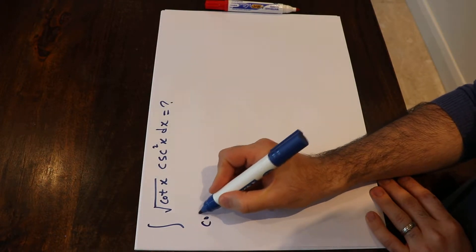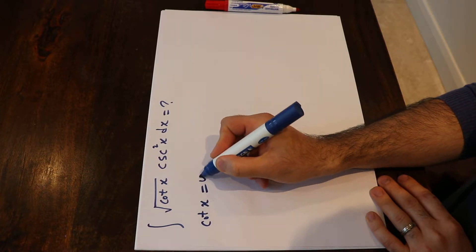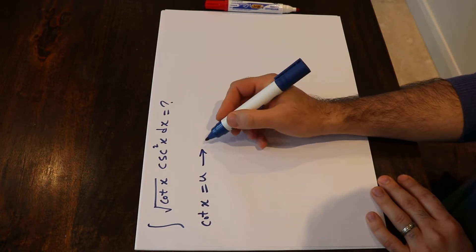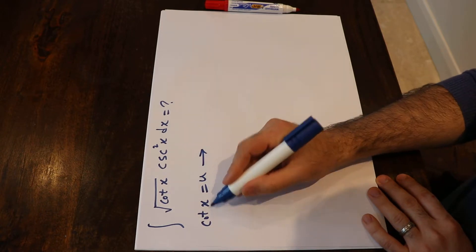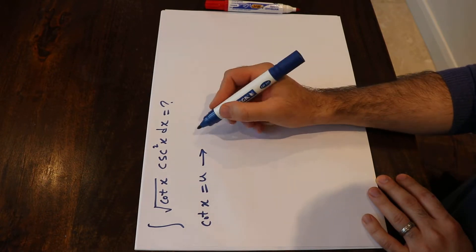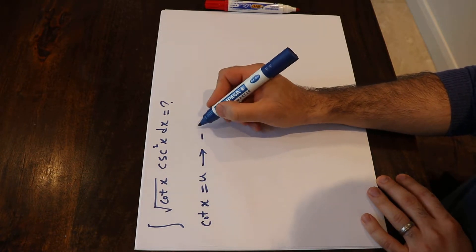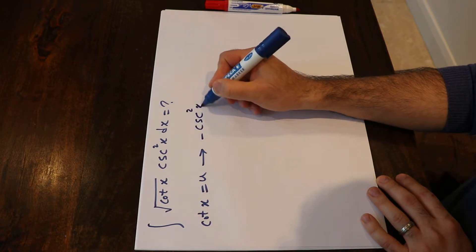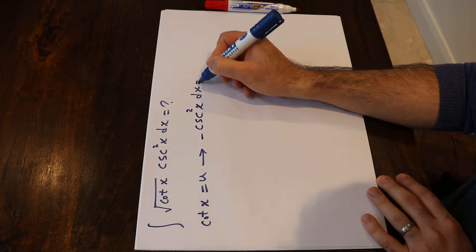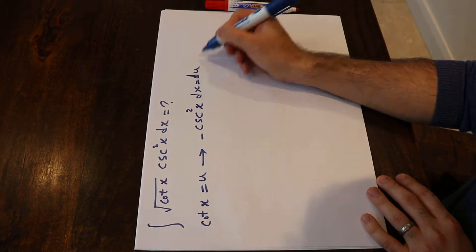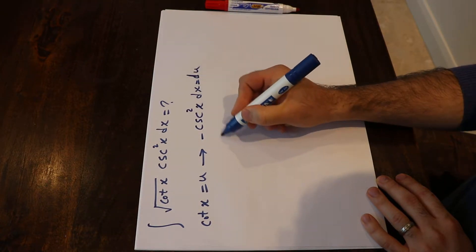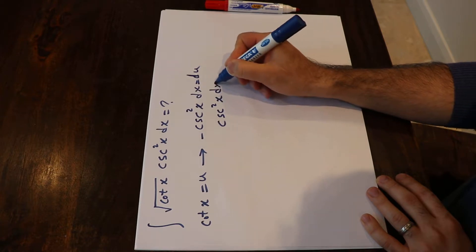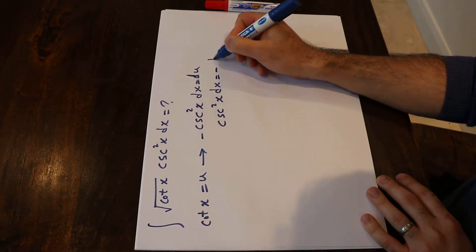If you define cot x as u and take the derivative from each side of this equation, you get that the derivative of cot x is equal to minus cosecant squared x dx, which will be equal to du. Therefore, cosecant squared x dx will be equal to minus du.